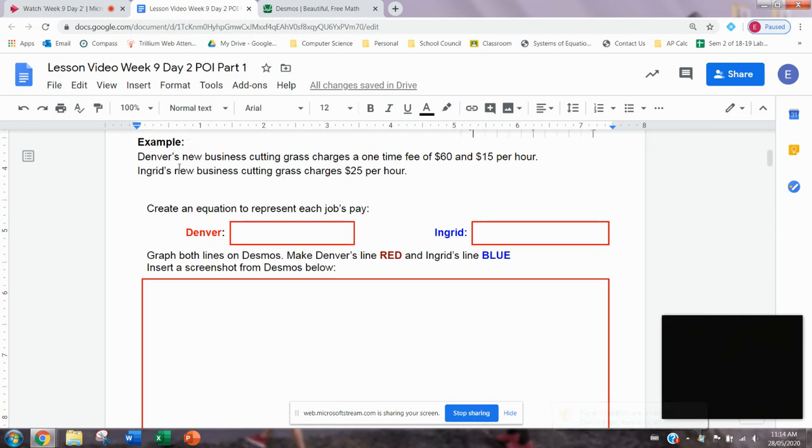Now, in the first example, we have a word problem with two different people who are having a business of cutting grass. So Denver charges a one-time fee of $60 and then also charges $15 per hour to cut grass. Ingrid charges $25 per hour, but she does not charge a one-time fee.